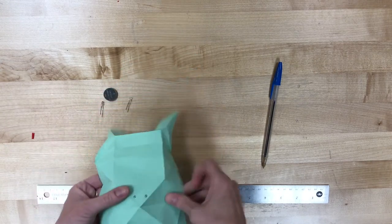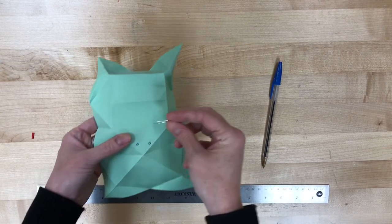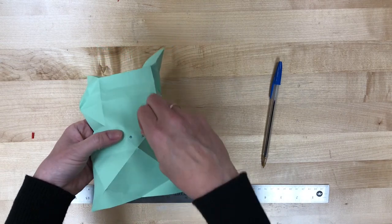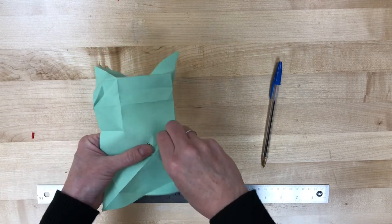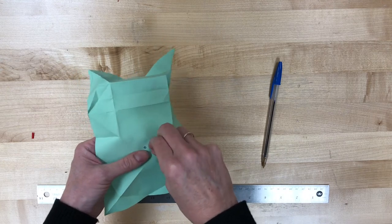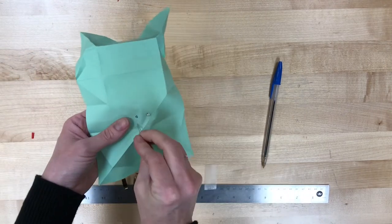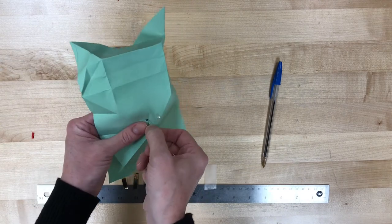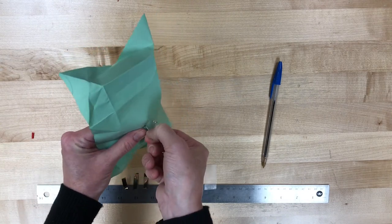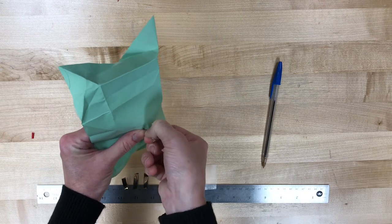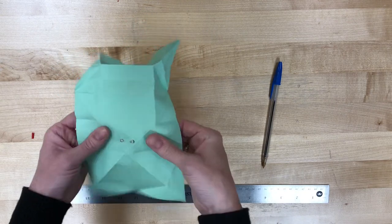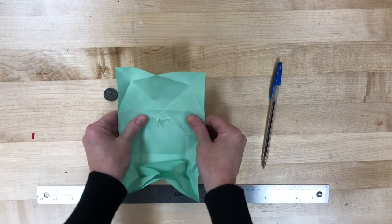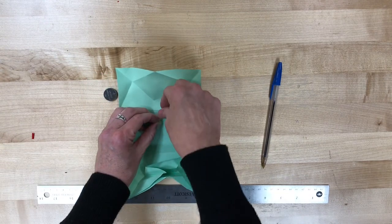And what we're gonna do is we're gonna poke that LED right through, and you want to keep that longer positive edge closer to the nose, the shorter negative leg closer to the outside of your frog face. And these can be kind of pokey, so be careful, don't stick yourself with them. And go ahead and pull those through so we can see the bits on the back.